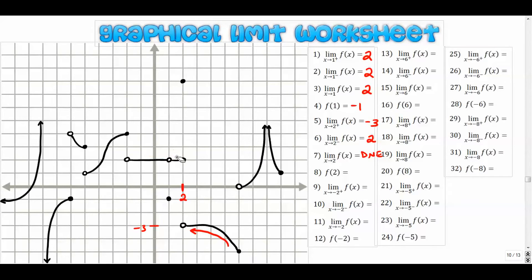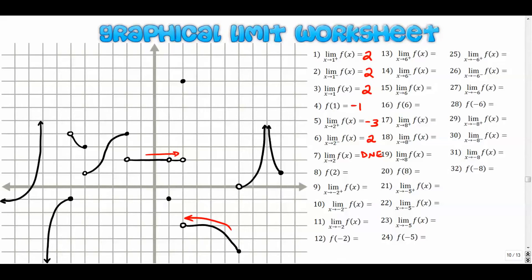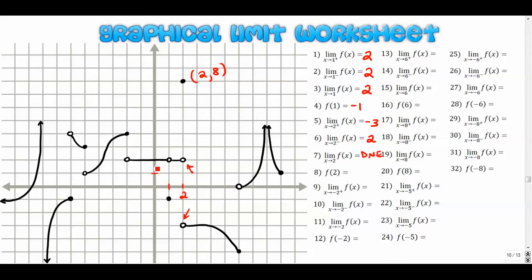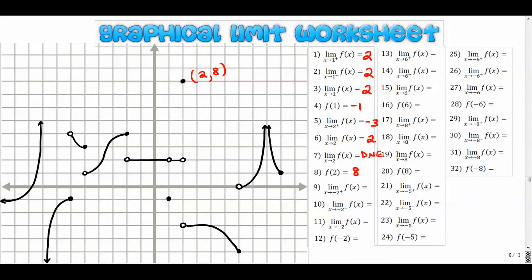Visually, as we come in from the left and from the right, if these arrows don't match up and they don't come together, they don't meet, then the overall limit does not exist. The function value at two — we're looking for the closed dot at positive two. Go up and down until you see the closed dot; it's not here but it's all the way up at two comma eight, so our function value when x is two is eight.